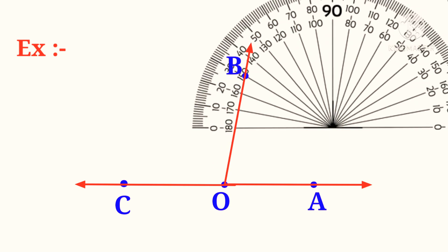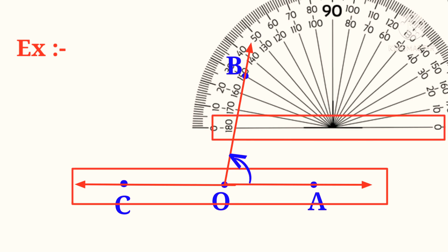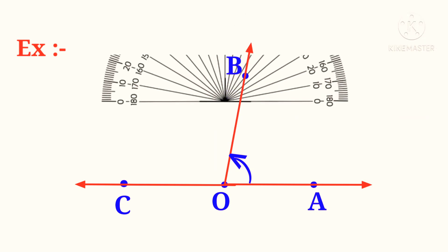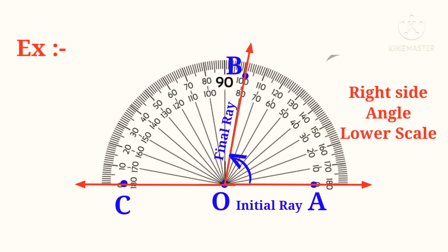Now let us learn how to measure the angle of OB. For this, the center of the protractor and the initial point O should coincide, and the line COA should coincide with the baseline of the protractor. In angle AOB, OA is the initial ray and OB is the final ray. This is the right angle.